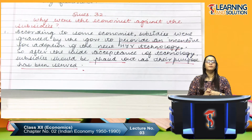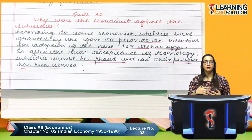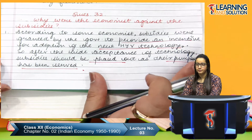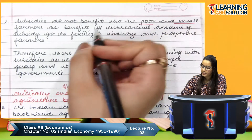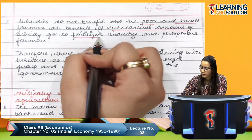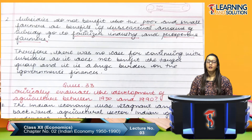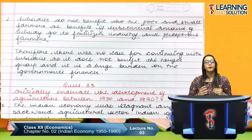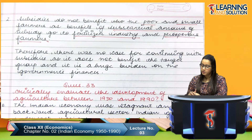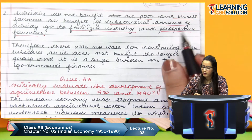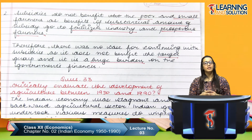According to some economists, subsidies were granted by the government to provide an incentive for the adoption of new HYV technology. After the wide acceptance of technology, subsidies would phase out as their purpose would be served. They also argued that subsidies do not benefit the poor and small farmers — a substantial amount goes to the fertilizer industry and prosperous farmers. Therefore there was no case for continuing subsidies as it did not benefit the target group and was a huge burden on government finances.